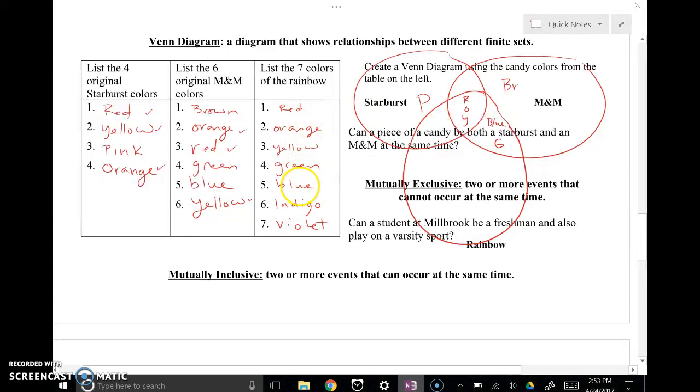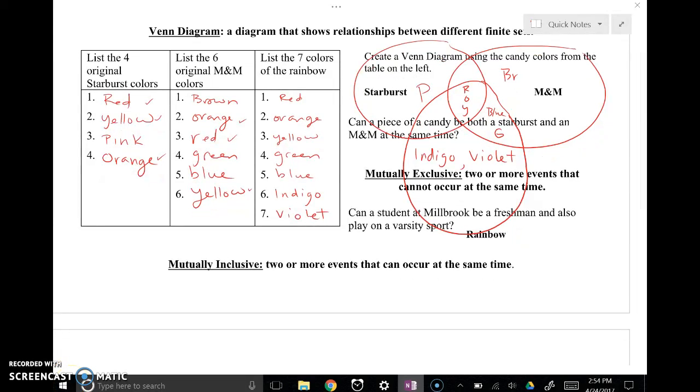Indigo and violet. Those are our two colors that we have not listed to complete our three event Venn diagram. And just to drive the point home, there is no color that is exclusive here. But notice that blue and green are colors that could be M&M and rainbow. So those would be mutually inclusive events.